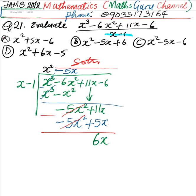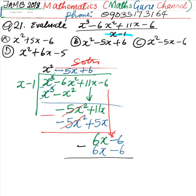Now we bring down the remaining term, which is minus 6. We say 6x divided by x gives us plus 6. Then 6 times x equals 6x, and 6 times negative 1 is negative 6. For our final subtraction: 6x minus 6x is 0, and negative 6 minus negative 6 is negative 6 plus 6, which is also 0.